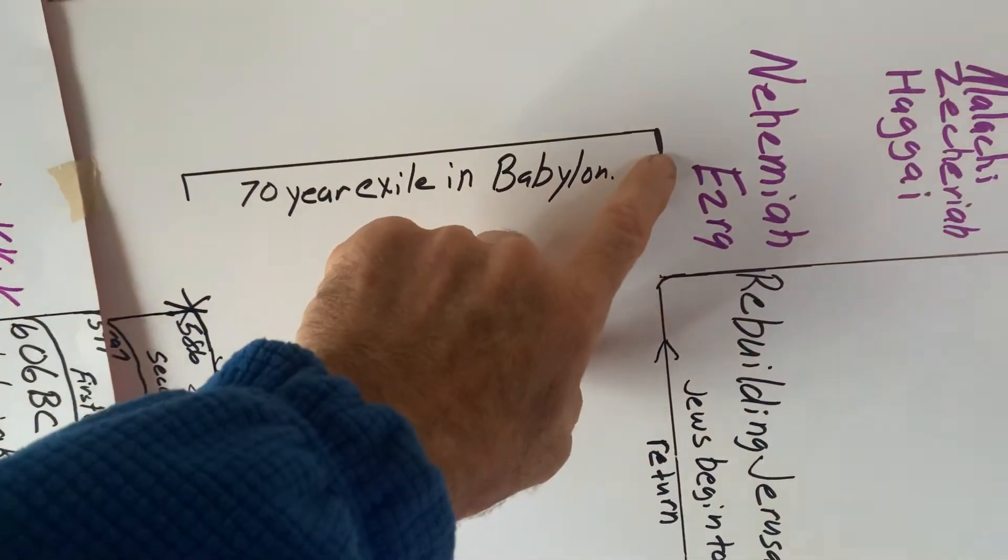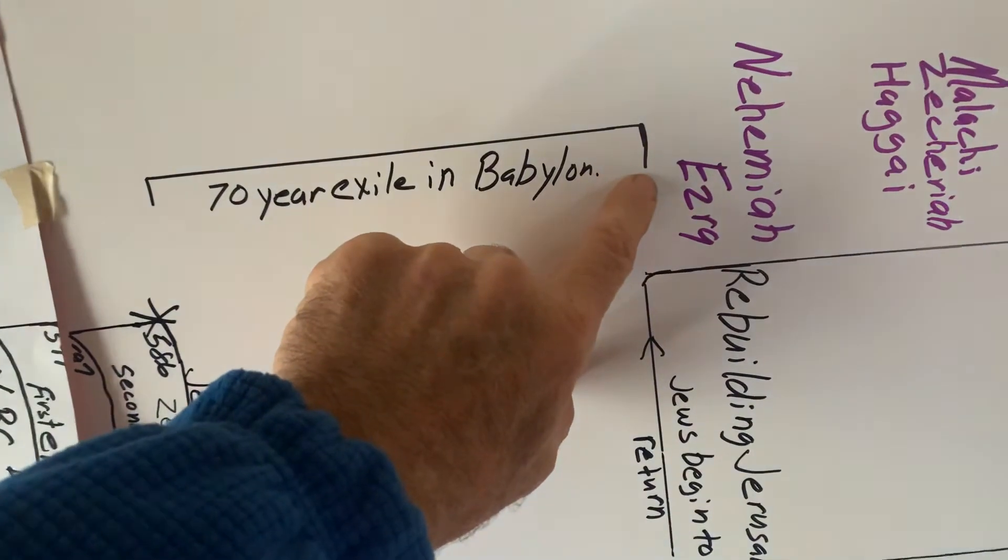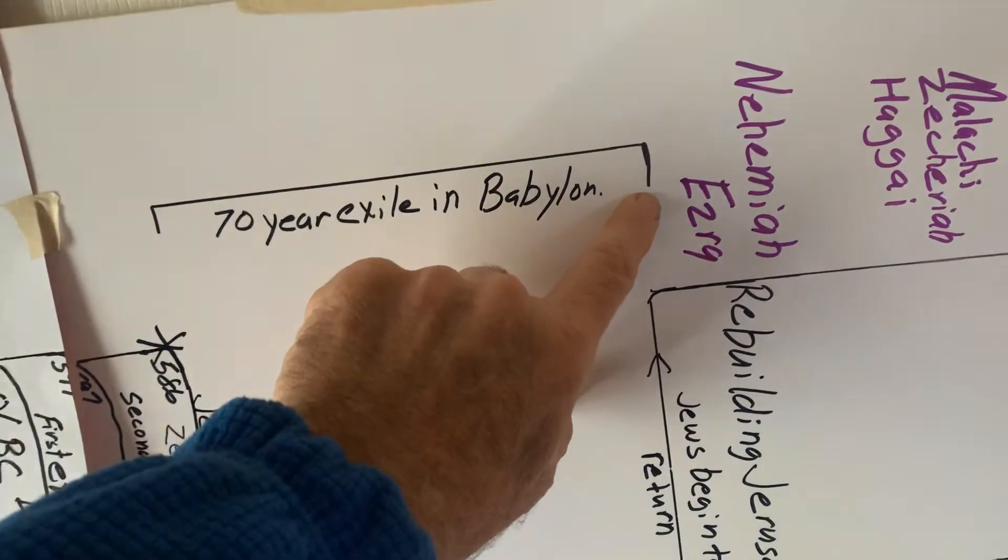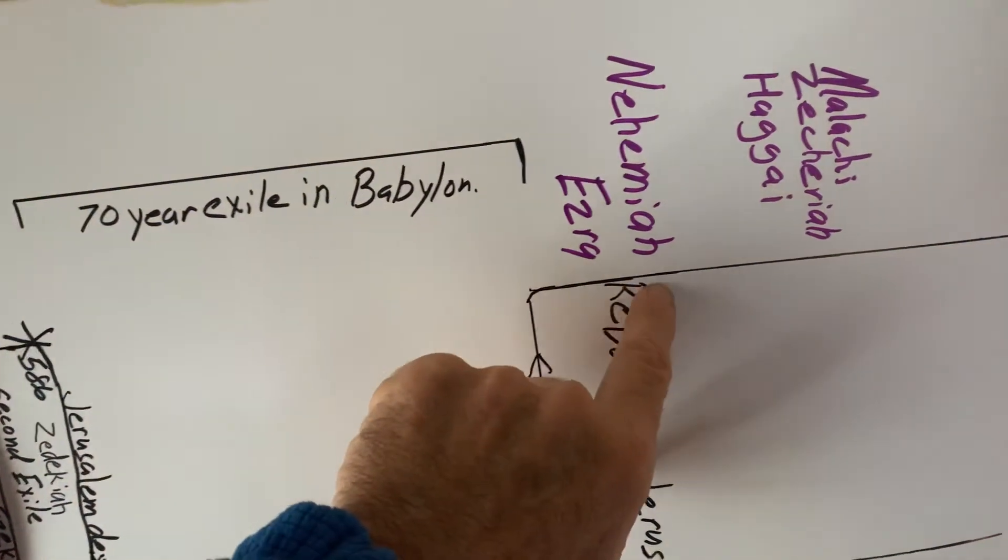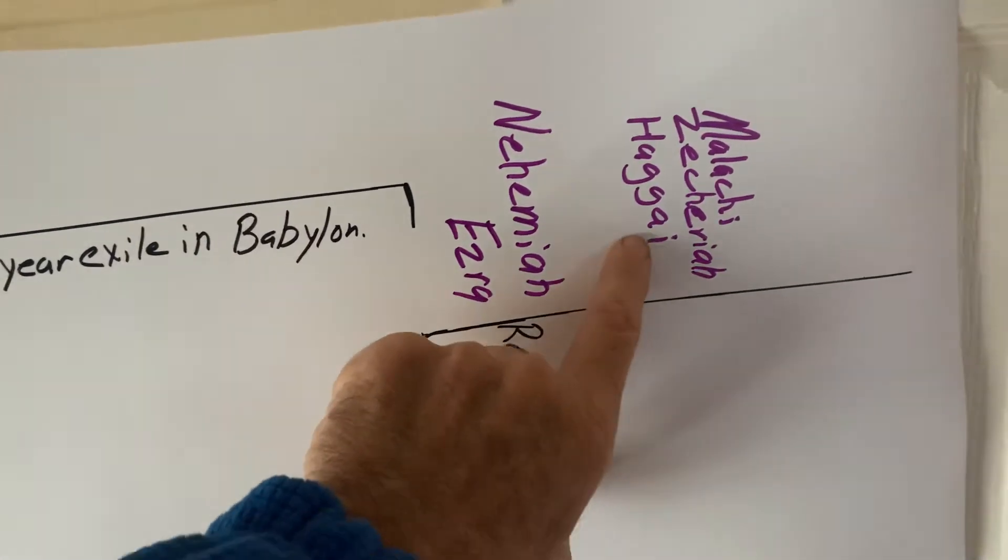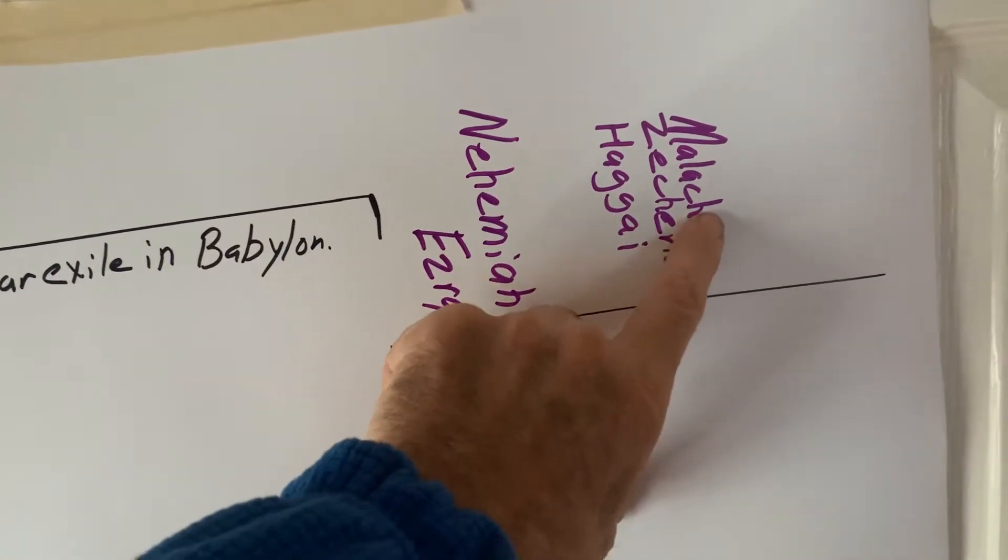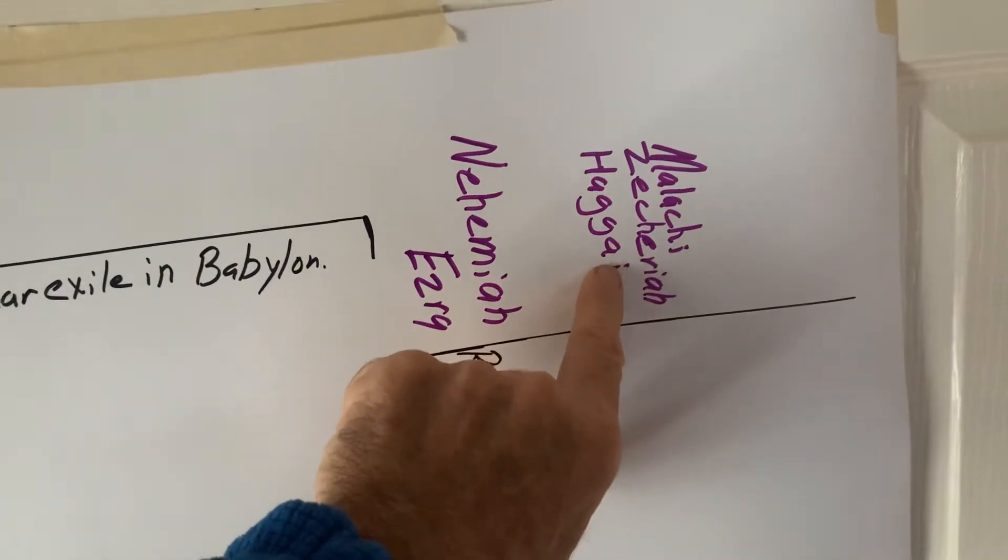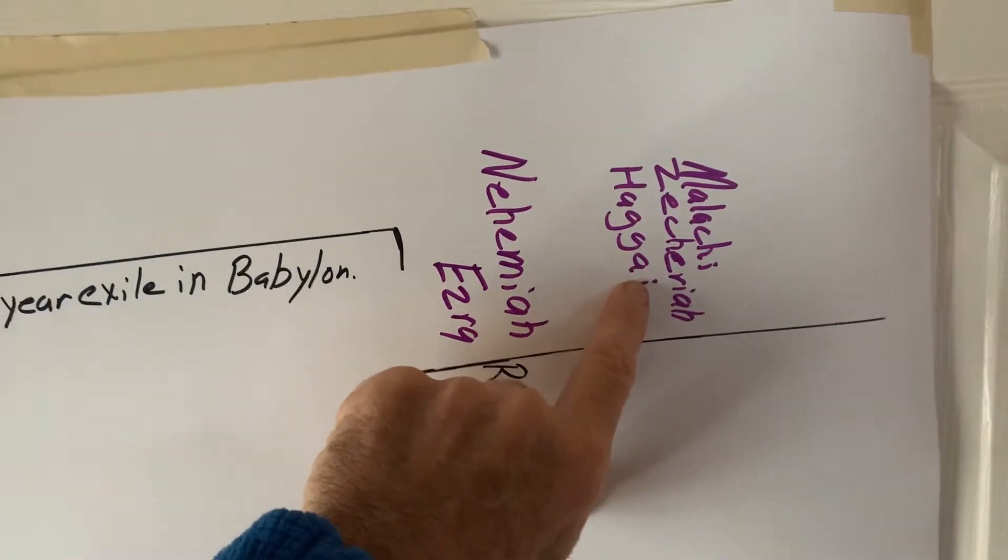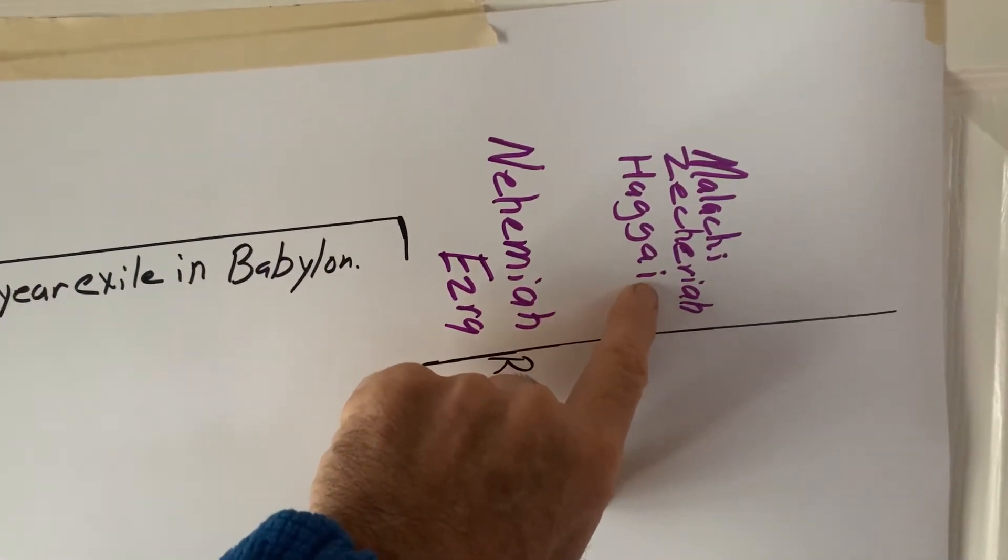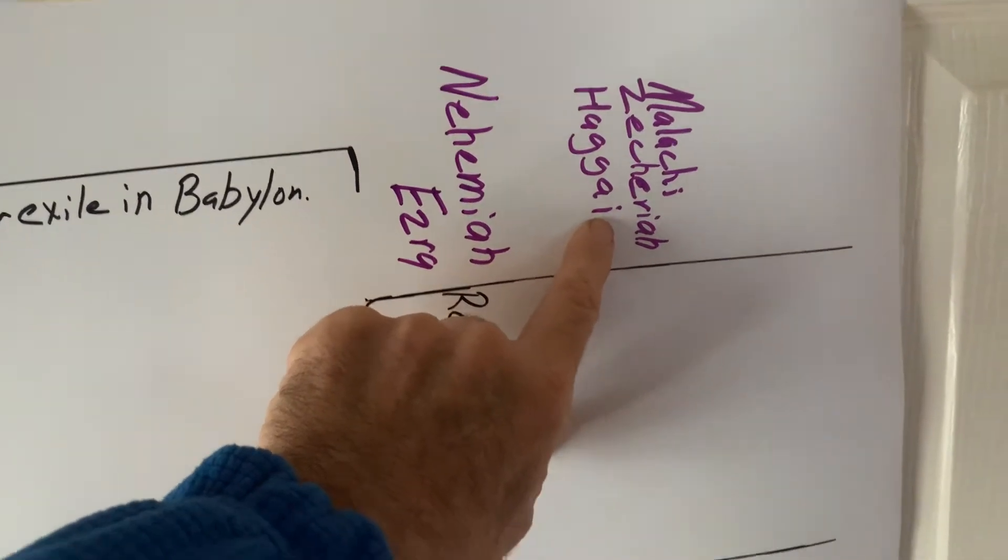And the exiles begin to return almost immediately thereafter to go home and to rebuild. And then there's guys like Haggai, Zechariah, and Malachi. They come along some decades later and encourage the reconstruction of Jerusalem when the people get a little bit lax.